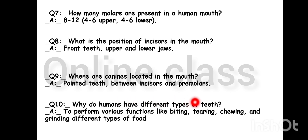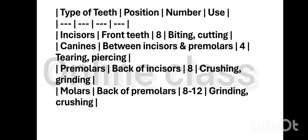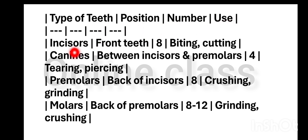Why do humans have different types of teeth? To perform various functions like biting, tearing, chewing, and grinding different types of food. Incisors are the front teeth for biting and cutting. Canines between incisors and premolars are for tearing and piercing. Premolars are for crushing and grinding. Molars at the back are for grinding and crushing.